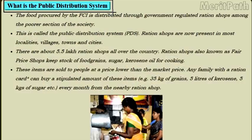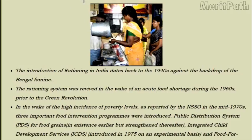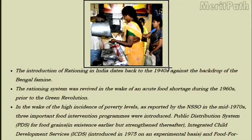The food procured by the FCI is distributed through government-regulated ration shops among the poorer sections of society — this is called the public distribution system. Ration shops can be seen in localities, villages, towns and cities. People holding a ration card can buy a fixed amount of sugar and food grains every month from a fair price shop. There are three kinds of ration cards in India: the Antyodaya cards for the poorest of the poor, and BPL cards for people living below the poverty line.